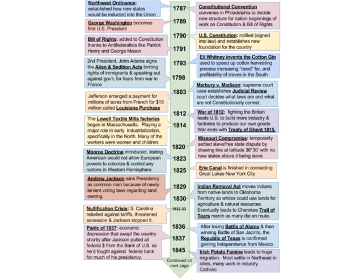In 1798, second President John Adams signed the Alien and Sedition Acts, limiting immigrant rights and freedom of speech — the First Amendment — because of fears of war with France. In 1803, Marbury v. Madison established judicial review: the court decides what laws are constitutionally correct. Also in 1803, Jefferson arranged the Louisiana Purchase — millions of acres from France for $15 million, the largest land acquisition in U.S. history. 1812 brings the War of 1812; fighting Britain leads the U.S. to build more industry. The war ended with the Treaty of Ghent in 1815.